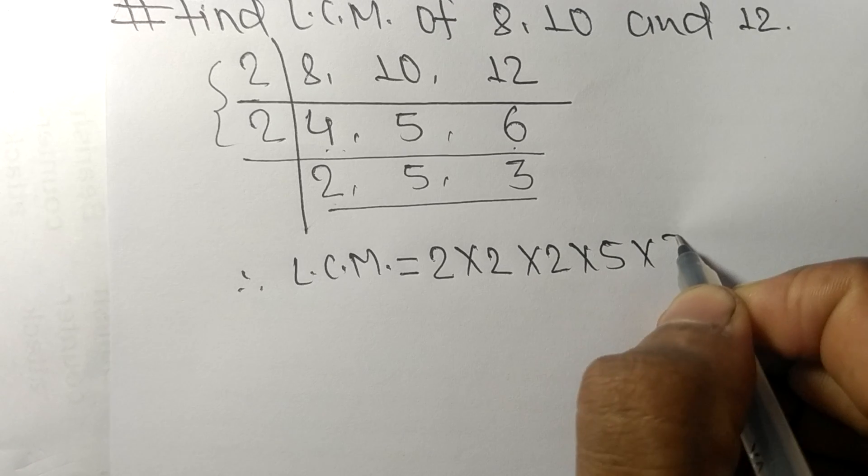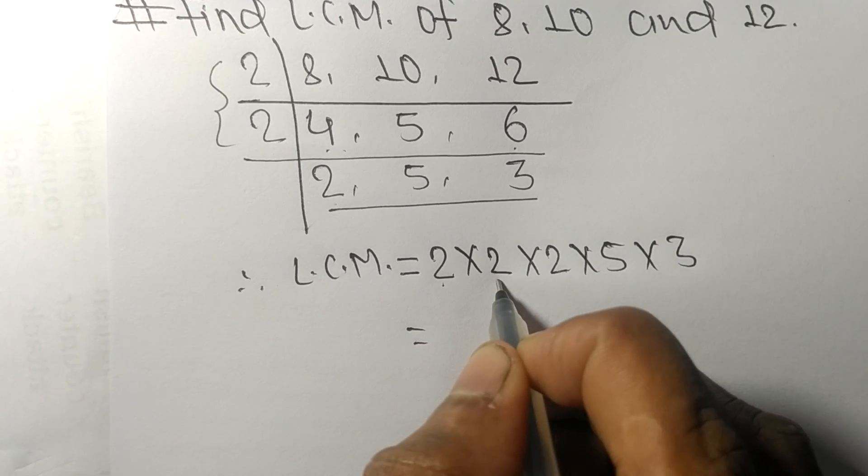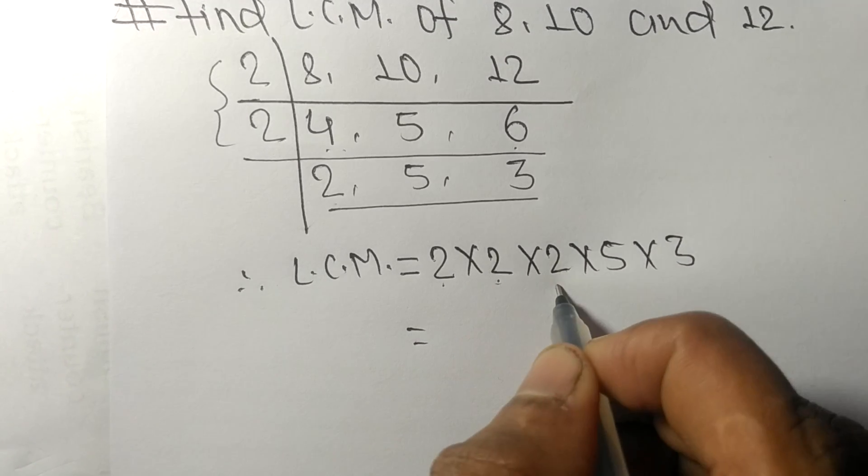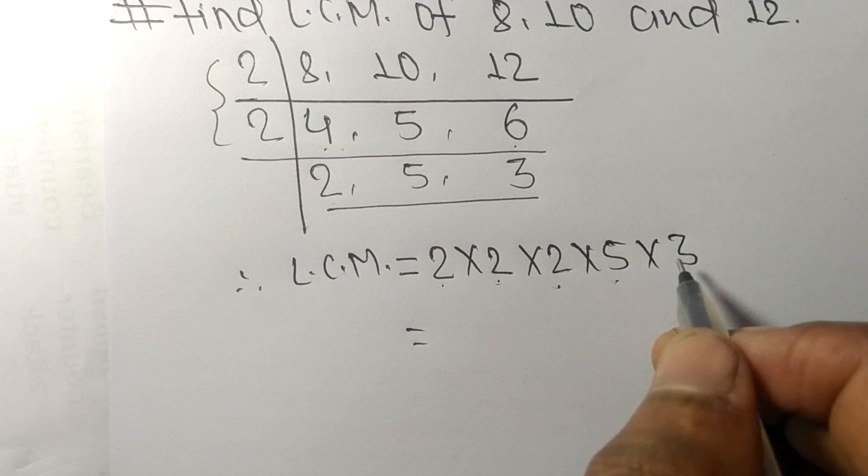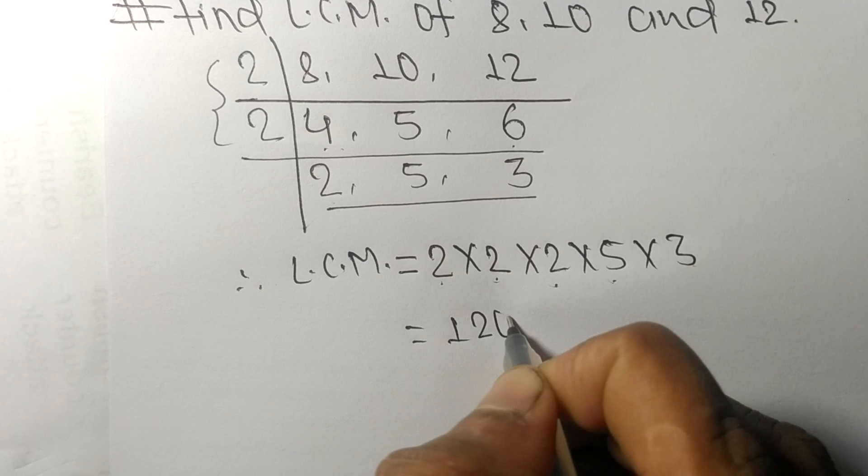So 2 times 2 means 4, 4 times 2 means 8, 8 times 5 means 40, 40 times 3 means 120.